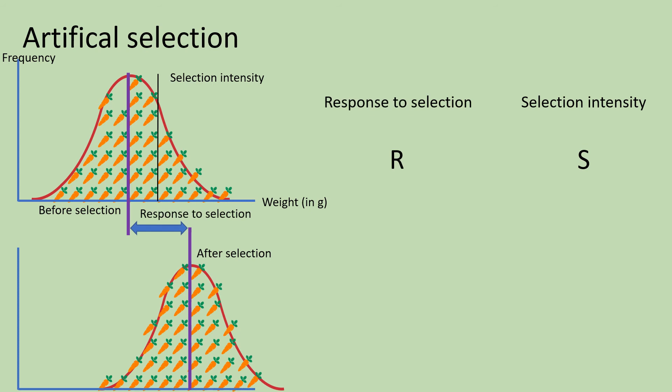If the difference is big, then the response to selection is high, and if the difference is small, the response to selection is small.